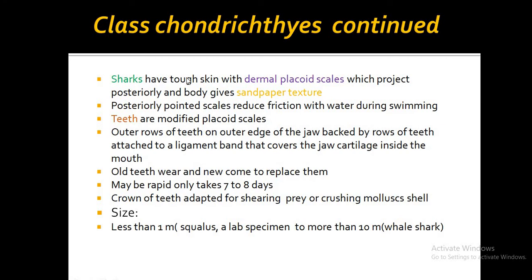Sharks have tough skin with dermal placoid scales which project posteriorly and give the body a sandpaper texture, as we have already seen. These posteriorly pointed scales benefit the shark during swimming by reducing friction from the water on the posterior side.